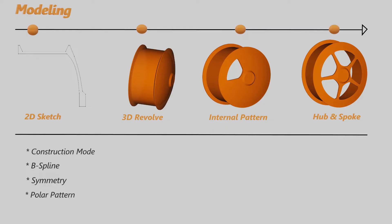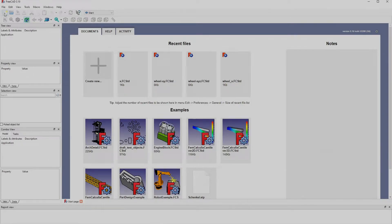Hello viewers, welcome back. Today we are going to model a wheel with five spokes. We are going to use a 2D sketch to build the cross section of the wheel, then revolve it 360 degrees. Then we are going to create a 2D sketch for the spoke pattern and use that to create the internal wheel pockets. The free capabilities we are going to utilize are construction mode, B-spline, symmetry, and polar pattern.